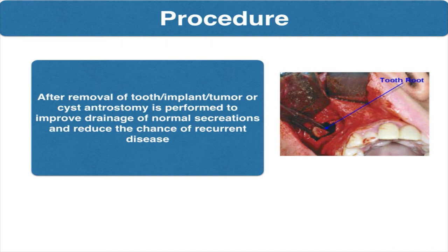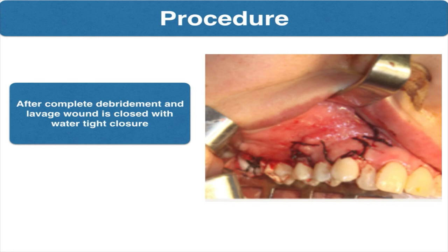If there is pus it is drained, or if there is any pathology it is removed with copious saline wash. If there is any bleeding, the sinus is packed with ribbon gauze and adrenaline for one to two minutes. Once the bleeding is arrested, it is irrigated with saline and packed with iodoform gauze with one end of the gauze through the nasal anterostomy or through a small incision placed in the buccal vestibule.